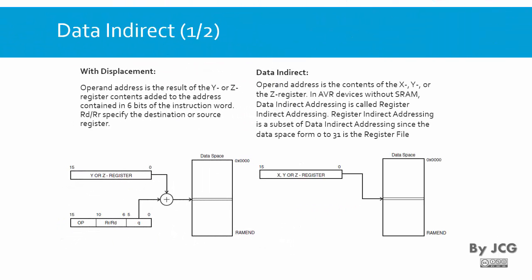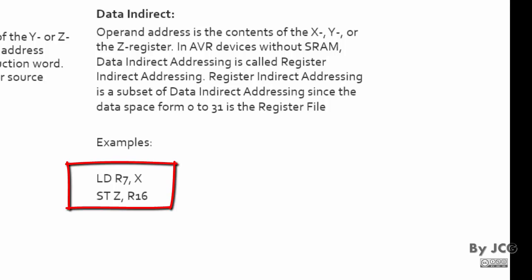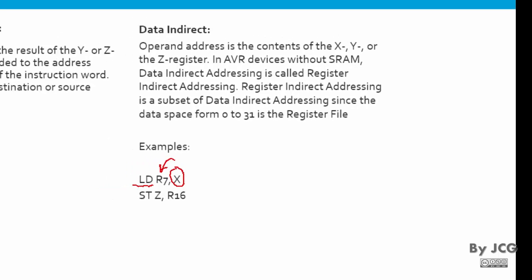The other one is the data indirect. We have two types of indirect addressing: with displacement and indirect addressing. In indirect addressing, you don't give the microcontroller the address directly — you give it to someone else. This someone else is the X, Y, or Z registers. Inside those registers you store the address you want to access and then you tell the microcontroller to access whichever address is stored in register X, Y, or Z. For example: load — read — whichever address is stored in X and put it into register 7. This is the data indirect addressing.